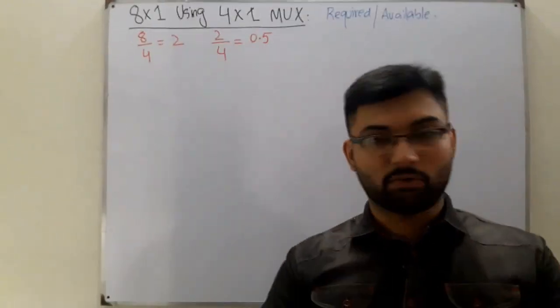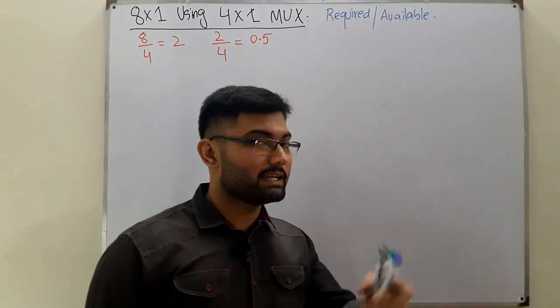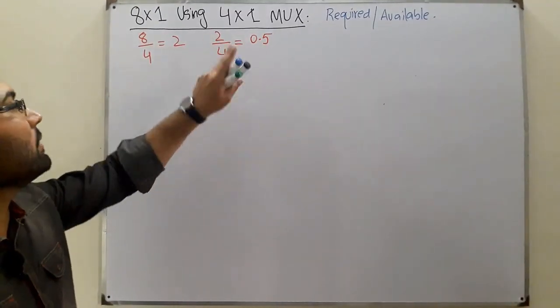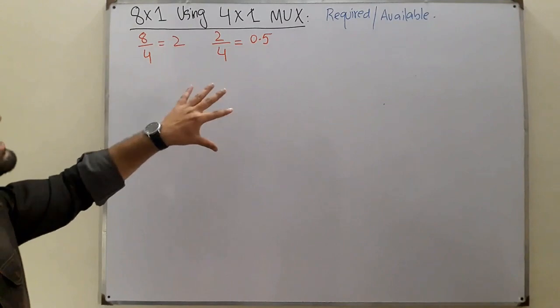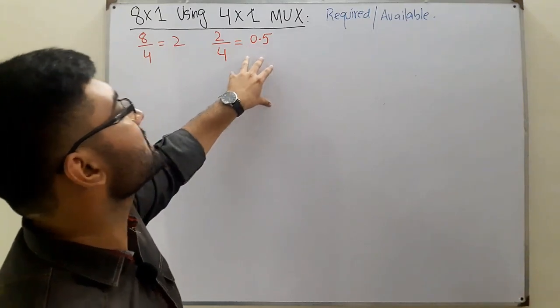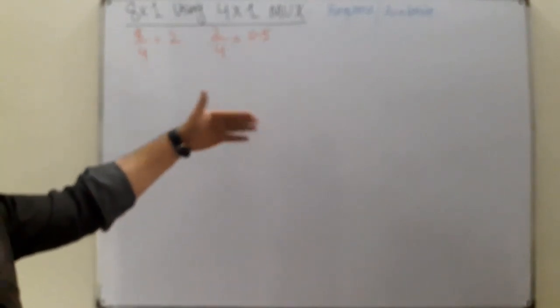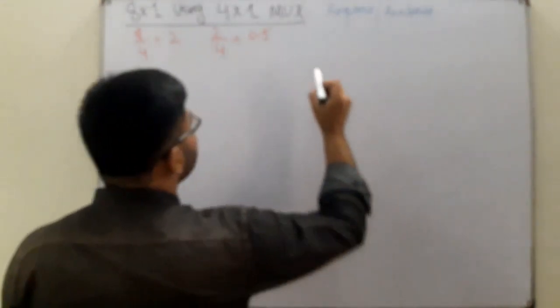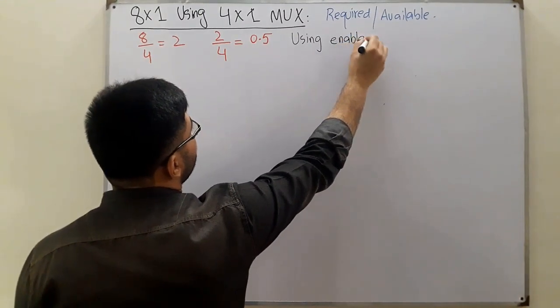You get 0.5. In the previous examples we had simple whole numbers, but this time it's a little tricky. Point five means half the inputs of the third multiplexer would be used and half would not be used. We can handle this using the enable signal.